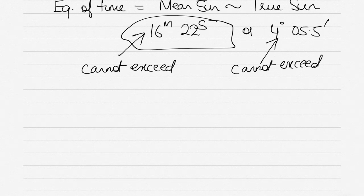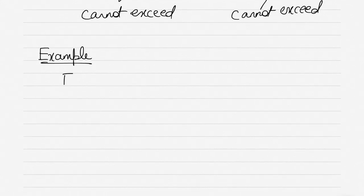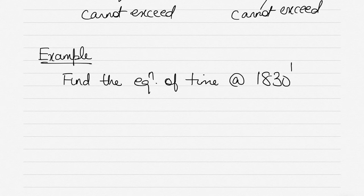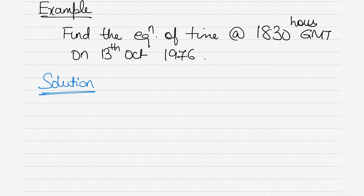Before I end this video, let me show you the application of this theory in a question. In separate videos I'll take up more solved and unsolved questions. So here is the example: find the equation of time at 1830 hours GMT on 13th October 1976. You may not have the 1976 almanac — that's fine, just focus on the solution method and how we find the equation of time.